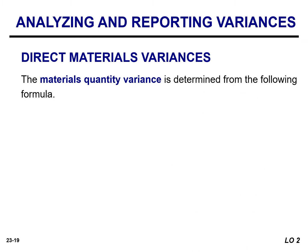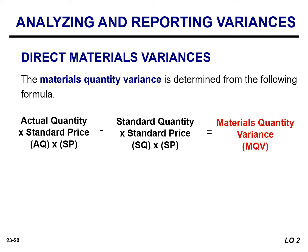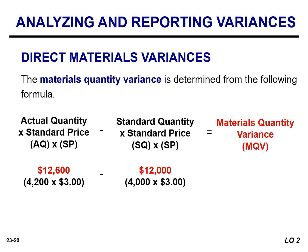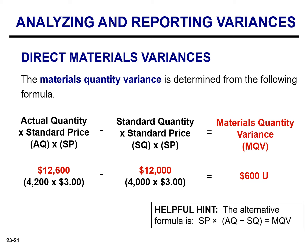The other component of the materials variance is the quantity variance, which results from differences between the amount of material actually used and the amount that should have been used. The material quantity variance is calculated as the difference between the standard cost of the actual quantity — actual quantity times standard price — and the standard cost of the amount that should have been used — standard quantity times standard price. The material quantity variance is $600 unfavorable, calculated as $3 multiplied by 200 units of excess usage.